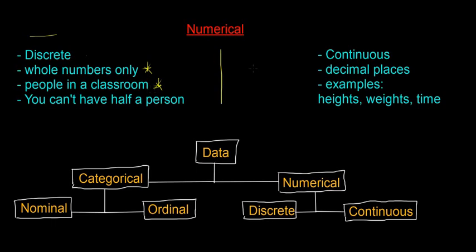The next one, then, is continuous data. In continuous data, you can have decimal places. So it's not only whole numbers, so you can have decimal places in continuous number, and examples of continuous data are heights, weights, time, and there's loads of other examples as well.